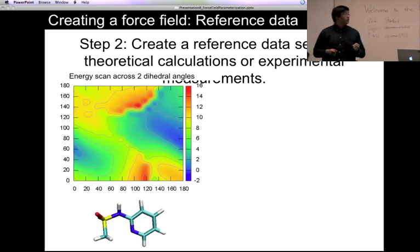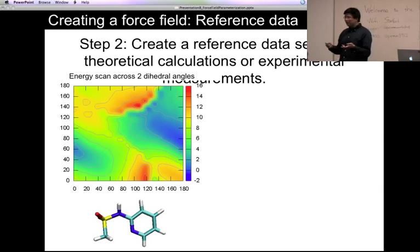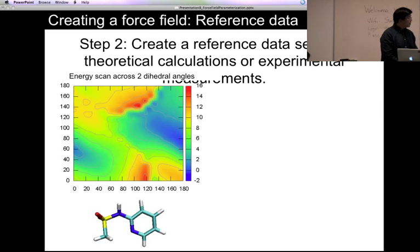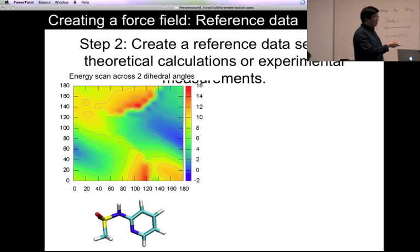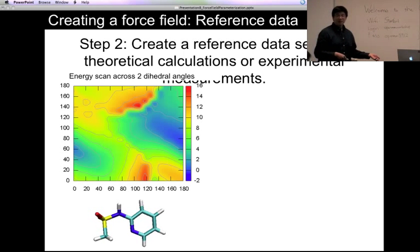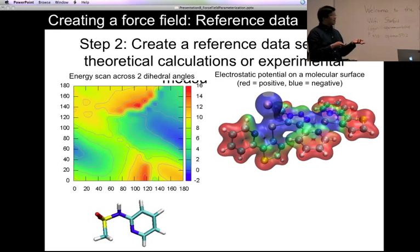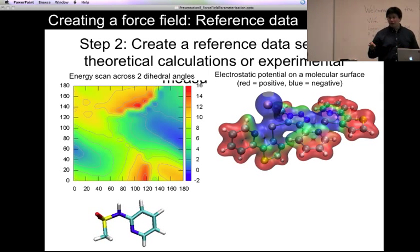The second step is to choose a set of reference data — the data that you want your force field to reproduce, hopefully reflecting reality. For instance, you can choose reference data from high-accuracy quantum mechanical calculations. This is what a 2D potential energy scan of the dihedral angles of a molecule might look like, computed using a high-level theory like MP2 or CCSD. You can also compute the electrostatic potential on a molecular surface — plotting it on a density isosurface — and have the charges in your force field reproduce that. That's how the RESP method works in the Generalized AMBER Force Field.